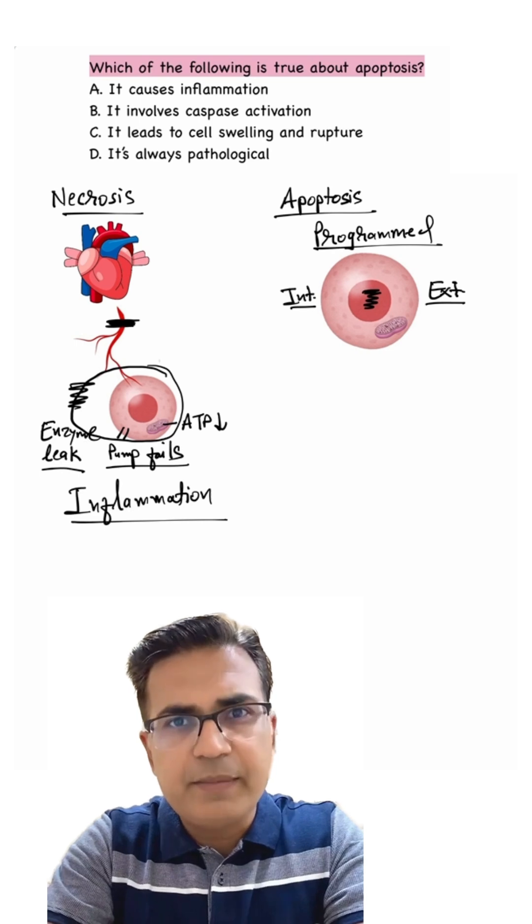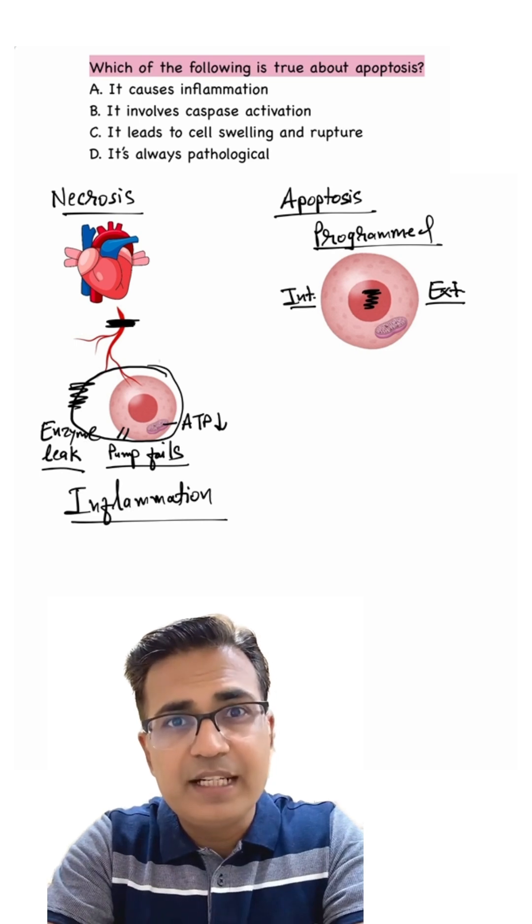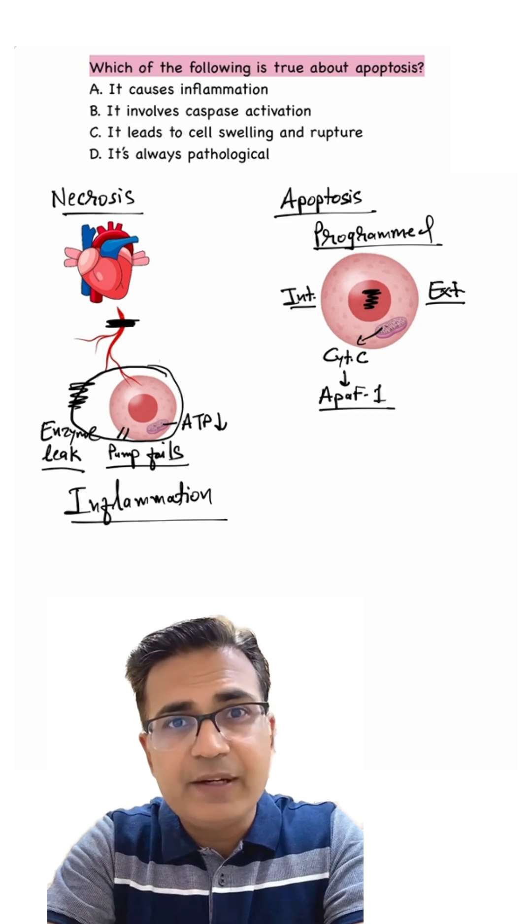intrinsic and extrinsic. In the intrinsic pathway, BCL2 family proteins regulate cytochrome C release from mitochondria, which binds to Apaf-1, where binding requires ATP. That activates caspase 9.